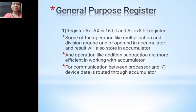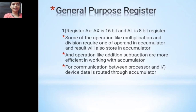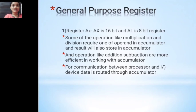AX is the 16-bit accumulator register and AL is its 8-bit part. Operations like multiplication and division require one operand to be in the accumulator, and the result is also stored in the accumulator. In the 8086, it is compulsory that one operand must be in the accumulator for these operations.